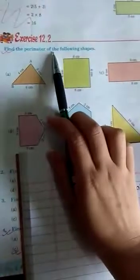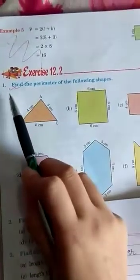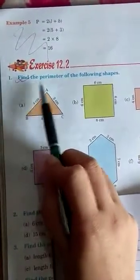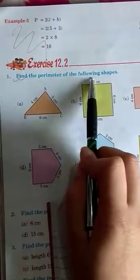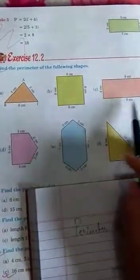Now come to exercise 12.2 here. First question is find the perimeter of the following shapes. So to find the perimeter of any shape, we will just add its sides.